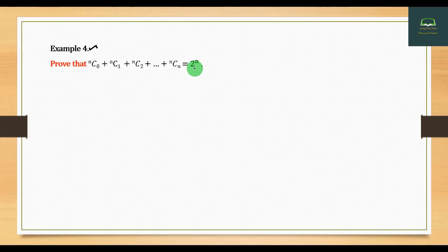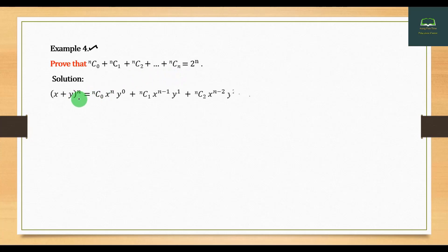The product is not perfect. The solution is a problem. X plus 1 is a problem with the polynomial expansion. The variables are equal to nC0.